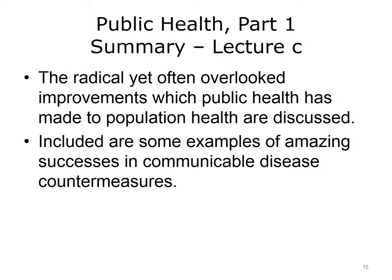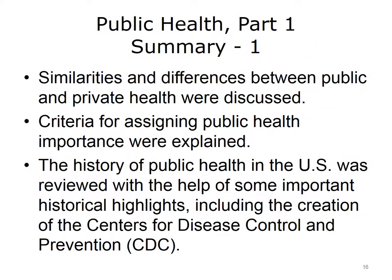This concludes Lecture C of Public Health Part 1. In summary, the radical yet often overlooked improvements which public health has made to population health are discussed, included are some examples of amazing successes in communicable disease countermeasures. This also concludes the unit Public Health Part 1. In summary, the similarities and differences between public and private health were discussed, criteria for assigning public health importance were explained, and the history of public health in the U.S. was reviewed with the help of some important historical highlights, including the creation of the Centers for Disease Control and Prevention.